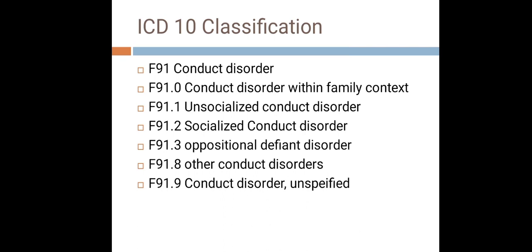F91.1 is unsocialized conduct disorder, characterized by a combination of dissocial and aggressive conduct along with significant abnormality in the individual's relationship with other children. These children are unable to integrate or mingle with their peers, tend to be isolated, and often experience rejection from same-age children.